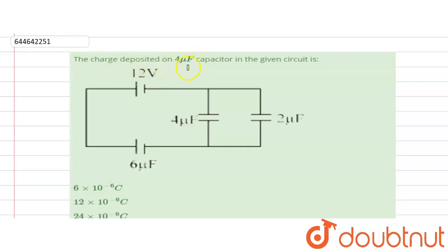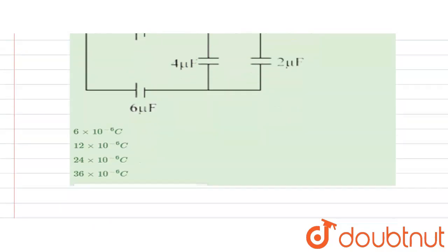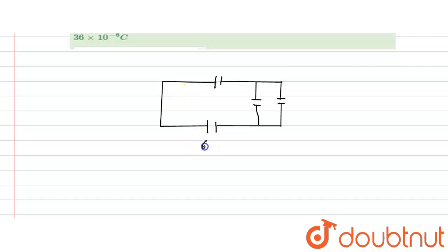The question is: given the charge deposited on a 4 microfarad capacitor. The diagram is given. We have to find the charge deposited on this 4 microfarad capacitor. First, we look at the diagram — it has a 6 microfarad, a 12 microfarad, a 4 microfarad, and a 2 microfarad capacitor.